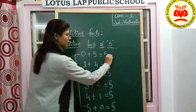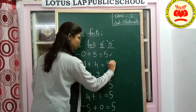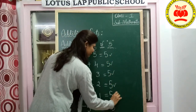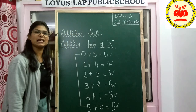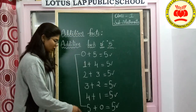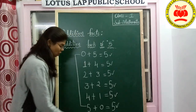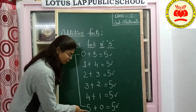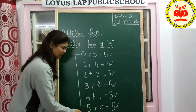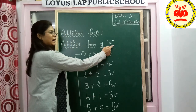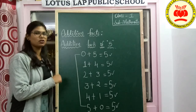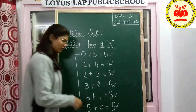So how many did we get? 1, 2, 3, 4, 5 and 6 addition facts, children. We can only go up to 5. We cannot take 6 because we are finding only addition facts of 5.